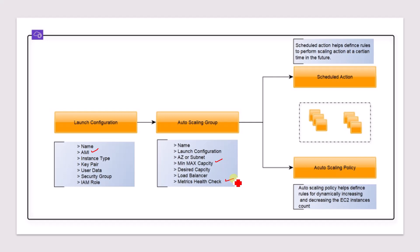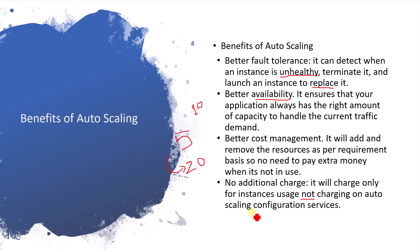If the application is continuously throwing errors based on the health check configuration, the auto scaling group will terminate that instance and spin up a new one. There are also scheduled actions, which help define rules to perform scaling at a specific future time. Auto scaling policies help define rules for dynamically increasing and decreasing EC2 instance count — for example, scaling up to a max of 20 instances when traffic is high, and scaling down to 5 when traffic is low.